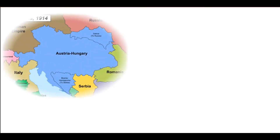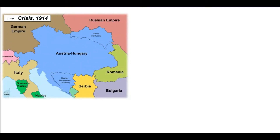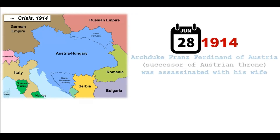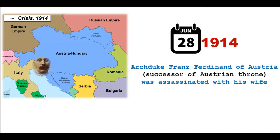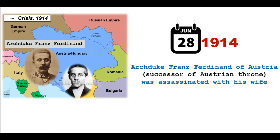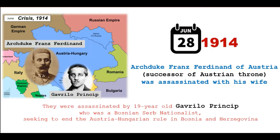The real spark came in June 1914 when the successor of Austria, Archduke Franz Ferdinand and his wife were killed by 19-year-old nationalist Gavrilo Princip, seeking to end the Austro-Hungarian rule in Bosnia and Herzegovina.